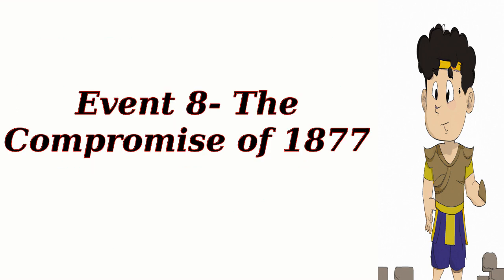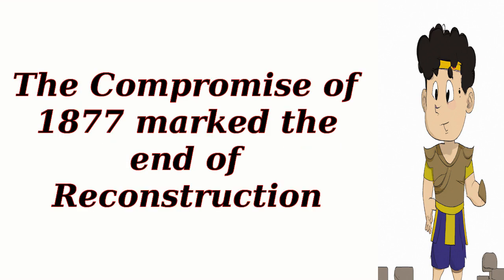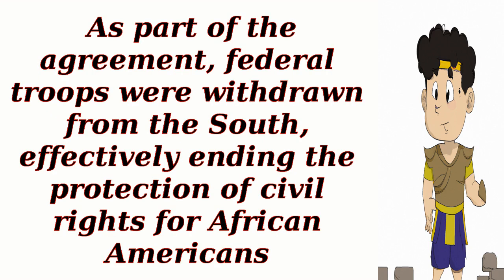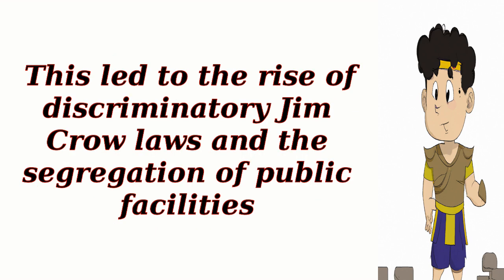Event 8 – The Compromise of 1877 marked the end of Reconstruction. As part of the agreement, federal troops were withdrawn from the South, effectively ending the protection of civil rights for African Americans. This led to the rise of discriminatory Jim Crow laws and the segregation of public facilities.